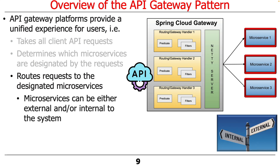The microservices that the gateway is forwarding to can either be internal to the system — ones that the developers built themselves — or they could be external third-party services. That's one of the beauties of using this Gateway: the clients don't really know or care where the microservices are coming from. This gives you extra degrees of flexibility and the ability to do orchestration and reuse, leveraging third-party components that you didn't develop but that are useful for building your applications.